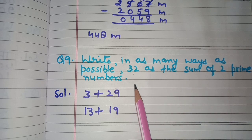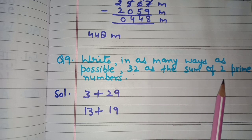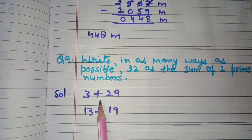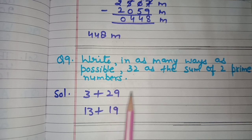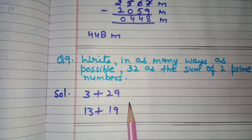Next is question number nine: write in as many ways as possible 32 as the sum of two prime numbers. One way is 3 plus 29 equals 32, and both 3 and 29 are prime numbers.